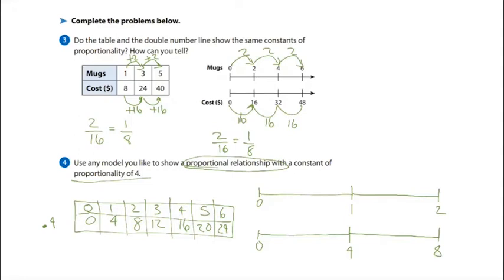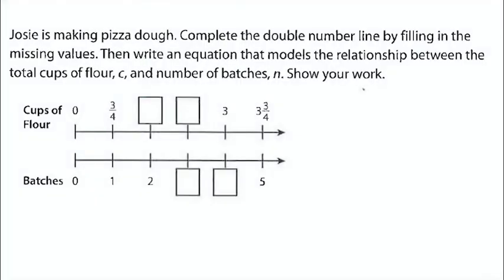I've posted your next homework assignment. I'm going to do three out of four homework problems in class; you still need to do the last one before submitting. The actual homework grade is quiz three. Problem one: Josie is making pizza dough. Complete the double number line by filling in the missing values, then write an equation that models the relationship between total cups of flour and number of batches — C equals something times n.